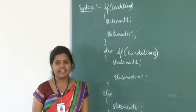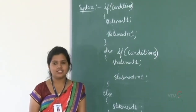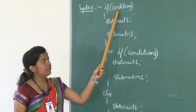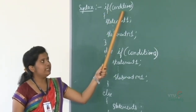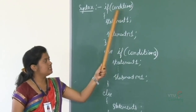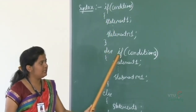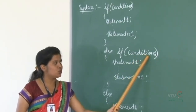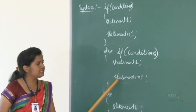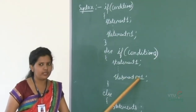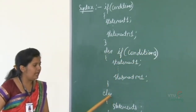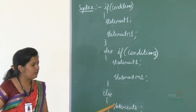Now let's discuss the syntax of if and if-else conditional control constructs. The syntax is: if, followed by condition 1 — if this condition is true, the statements in the if part will be executed. If condition 1 is false, control comes to the else-if part, where condition 2 is checked. If condition 2 is true, statements in the else-if part — that is, statement 1 through statement m1 — will be executed. If condition 2 is also false, control goes to the else part and those statements are executed.